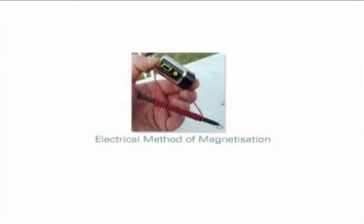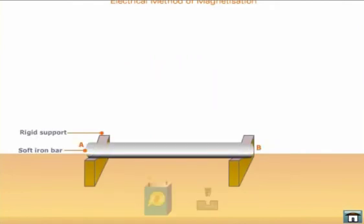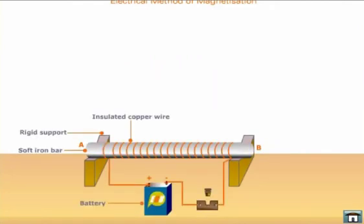Electrical method of magnetization. The given bar that is to be magnetized is placed inside a long coil of insulated copper wire. The copper wire is connected to a source of direct current as shown here.